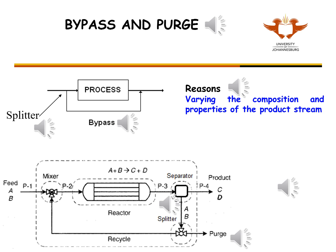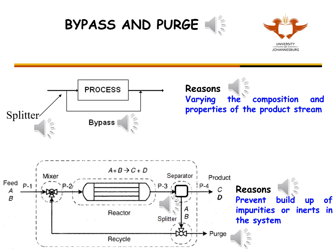A purge is a small stream that is taken off a recycle stream by a splitter. Note that the separator is typically used to separate the reaction products and unreacted chemicals. The impurities, or the inerts, would be totally separated in the separator and recycled with A and B. Hence the impurities would have no way to leave the plant except by means of the purge.